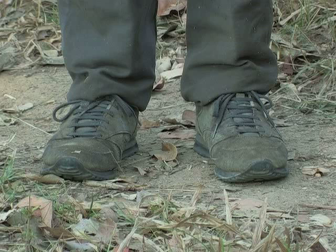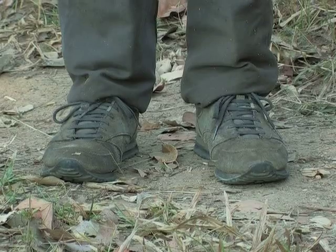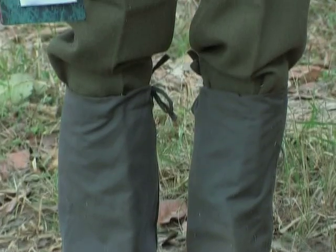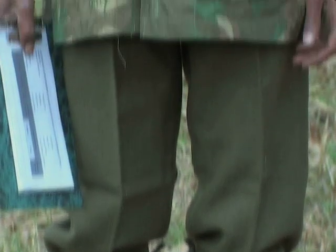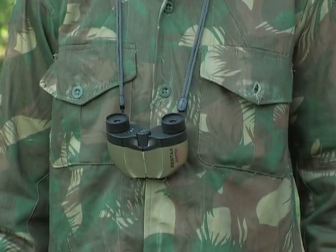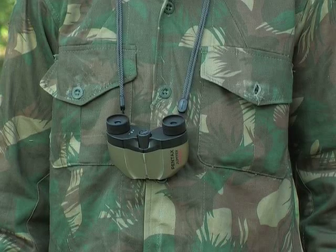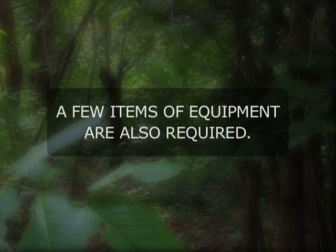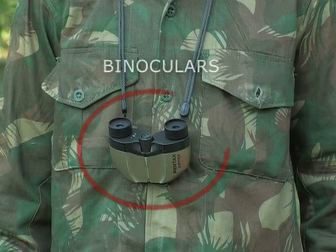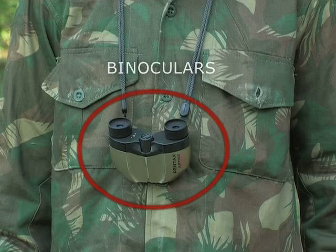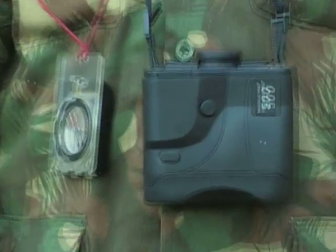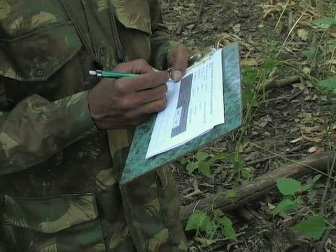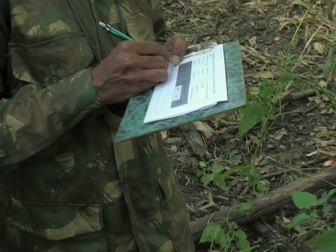Proper footwear is essential for walking in the jungle. Extra protection for the legs can help prevent ticks or leeches from getting on. The trousers and shirt or jacket must help the observer blend with the surroundings. A few items of equipment are also required: binoculars for identifying animals clearly and making accurate counts, a range finder to measure the distance from the observer to the animals, a compass, and of course a data sheet to note down the observations.